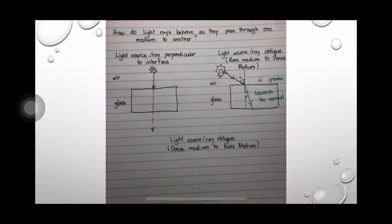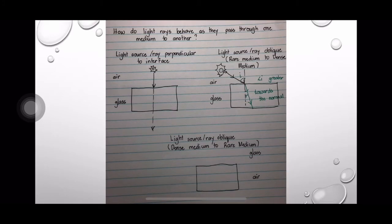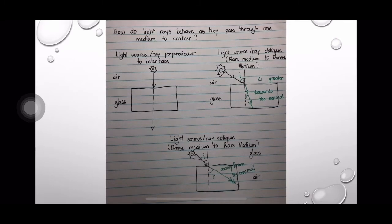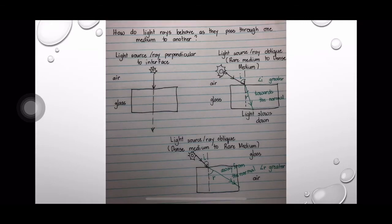Finally, if the light ray is still at an angle to the interface, but this time it passes from glass to air, the light ray will bend away from the normal. This is because the light ray becomes faster from a dense medium to a rare medium. The angle of incidence is less than the angle of refraction in this case.